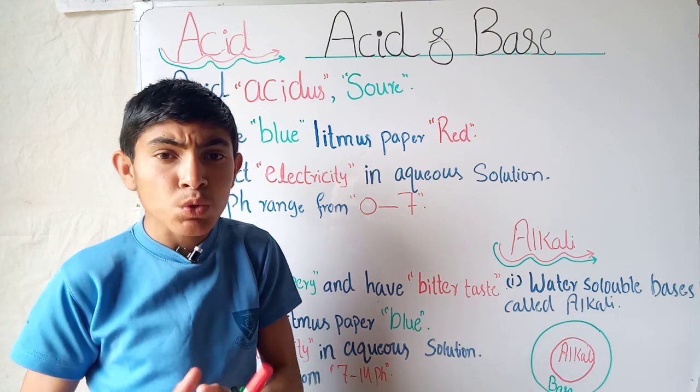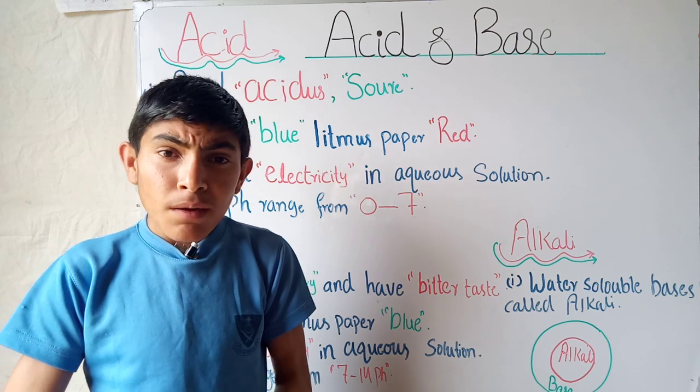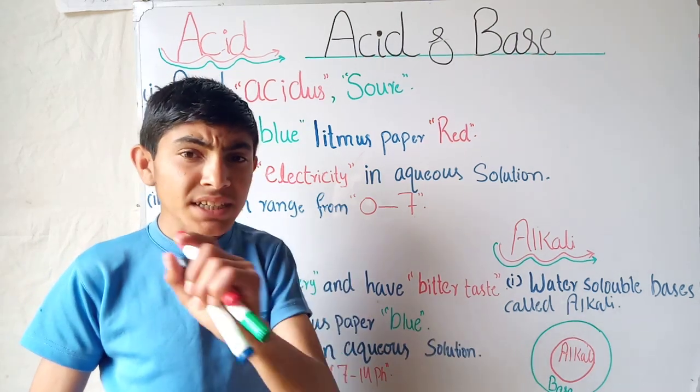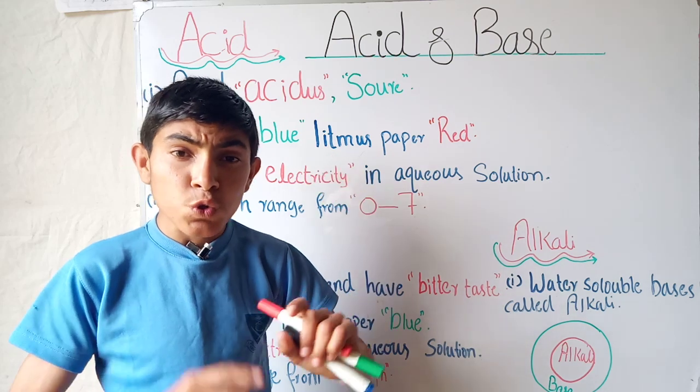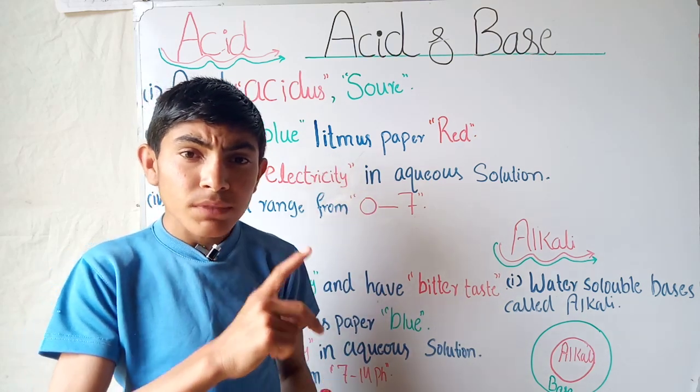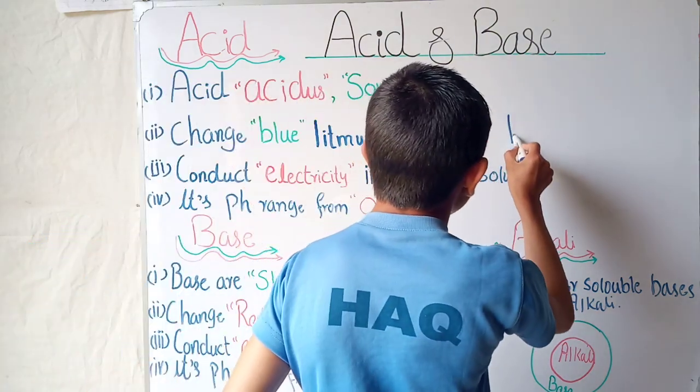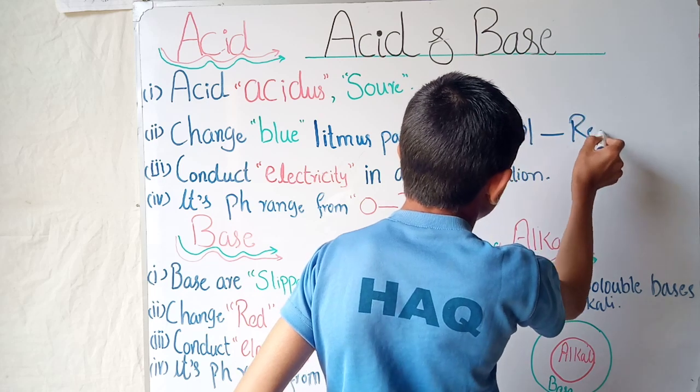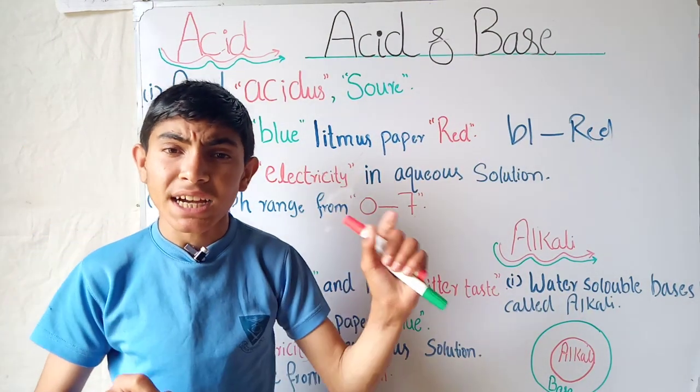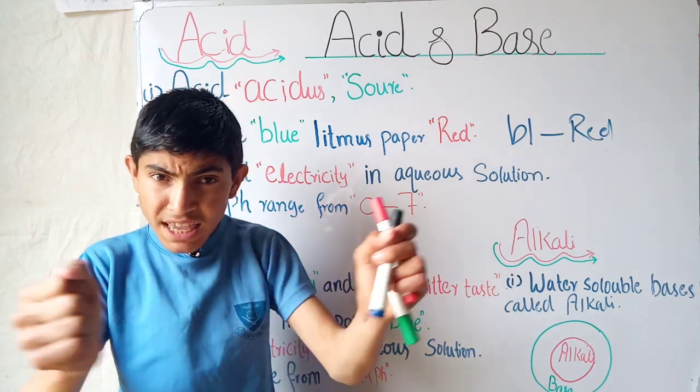The second is it changes blue litmus paper red. It means that there is an indicator which we call acid-base indicator. When we put the acid-base indicator in the acid, when the color of the acid-base indicator is blue, it converts the blue to red.